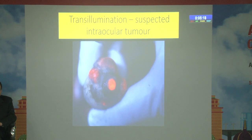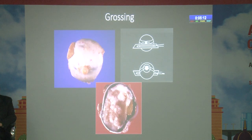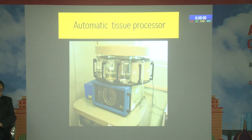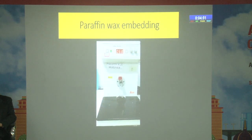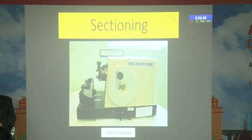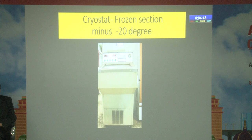We do the grossing first, finding out the location of the tumor in a suspected intraocular tumor. We cut the globe into sections — pupil-optic nerve sections — and examine under the gross microscope. Then we put the specimen through the automatic tissue processor, processed through separate graded alcohol. We then embed in paraffin wax, and finally do the sectioning. Sections of 3 to 6 microns are taken; in frozen section we use the cryostat at minus 20 degrees centigrade.